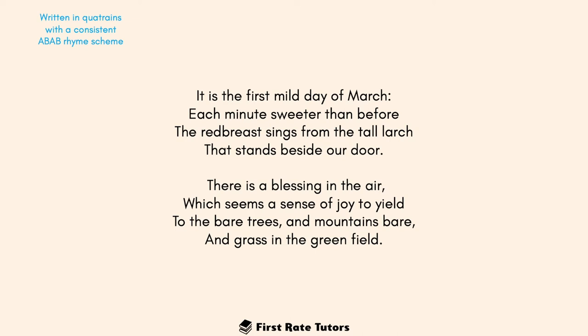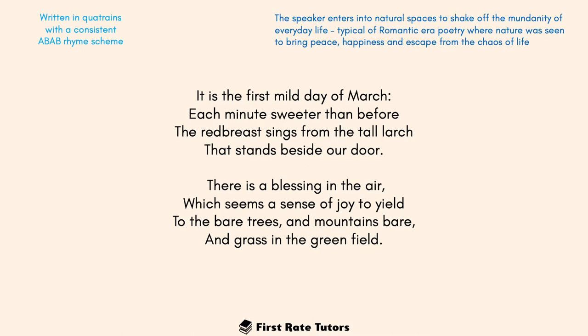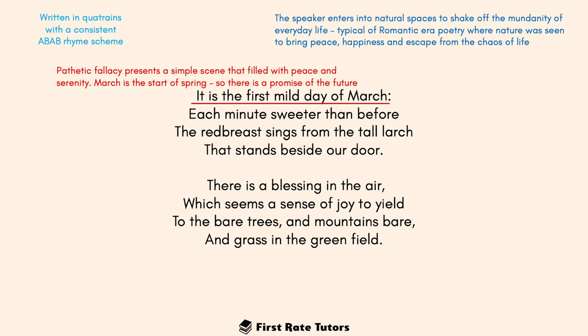In terms of how it's written, this poem is written in quatrains — four-line stanzas — with a consistent ABAB rhyme scheme. Looking at the first verse, 'March' and 'larch' rhyme, and 'before' and 'door' rhyme, and this continues throughout the poem. The overarching message is that the speaker enters into natural spaces — the walk in nature — to shake off the mundanity of everyday life, which is typical of Romantic era poetry where nature brings peace, happiness, and escape from chaos.